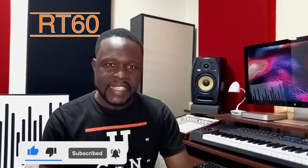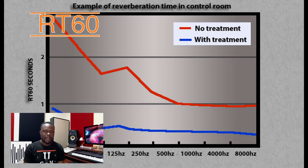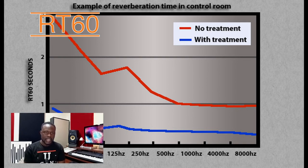Hello and welcome to the channel everyone. My name is Amos from Symmetry Acoustics. In today's video we want to talk about what is referred to as RT60. RT60 is a term used in acoustical engineering to describe how long it takes for a signal to die down by 60 dB after it has been played.